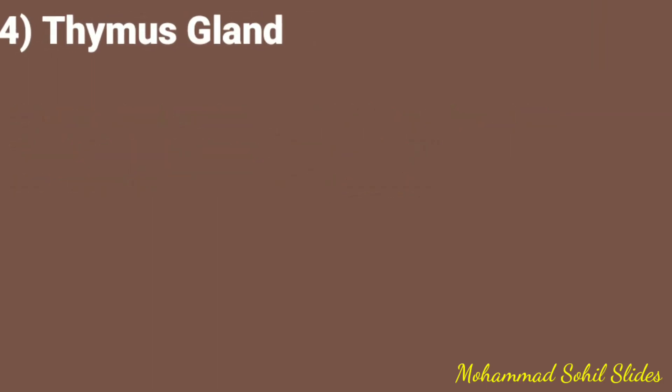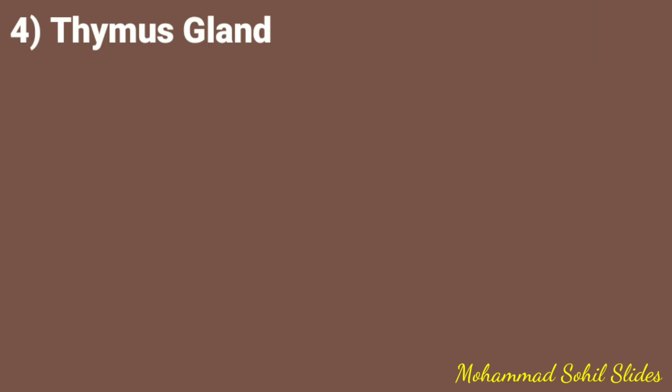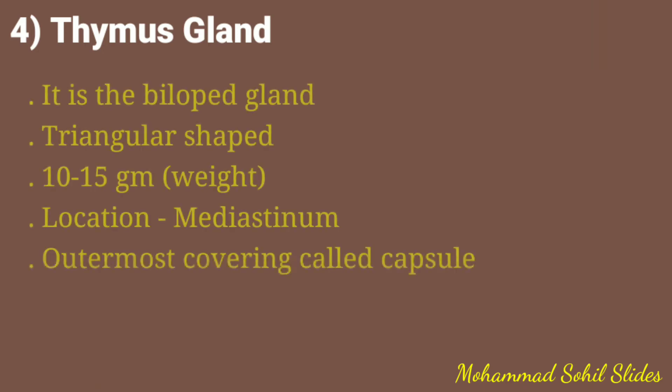Now coming to the last topic: the thymus. The thymus is a bilobed, triangular-shaped gland weighing about 10 to 15 grams. Its weight increases until puberty and then gradually decreases. It is located in the mediastinum, the partition dividing the thoracic cavity into left and right parts.